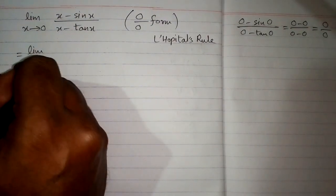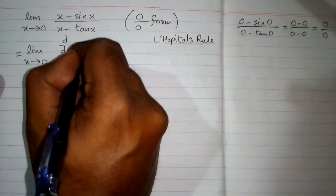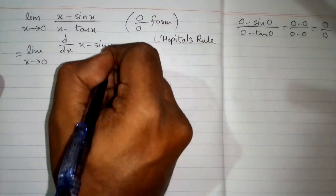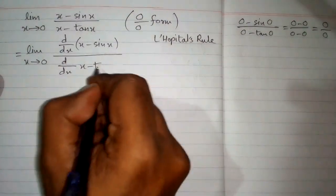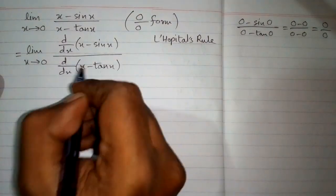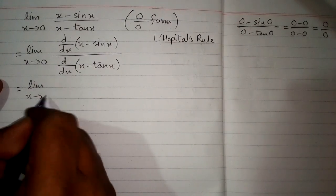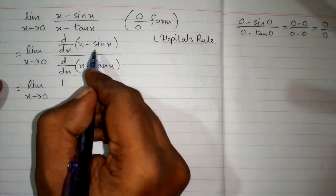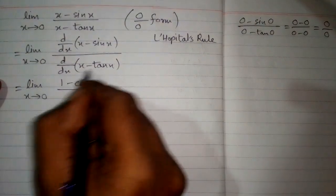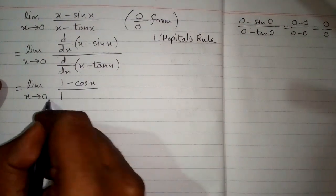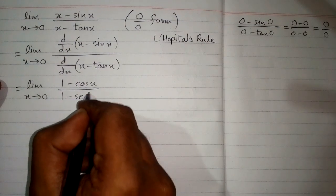When we apply L'Hôpital's rule on any function, we take the derivative of the numerator and the derivative of the denominator. The derivative of x is 1 and the derivative of sin x is cos x. In the denominator, the derivative of x is again 1 and the derivative of tan x is sec squared x.